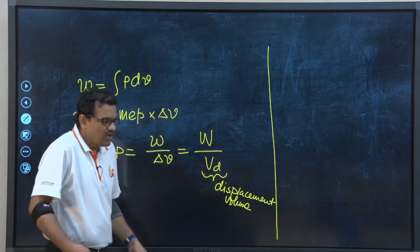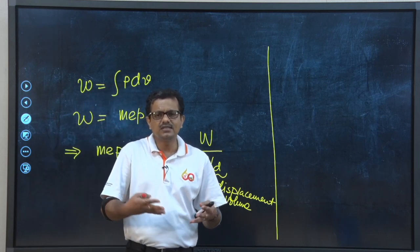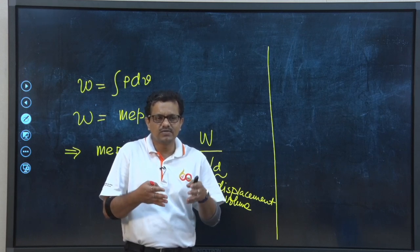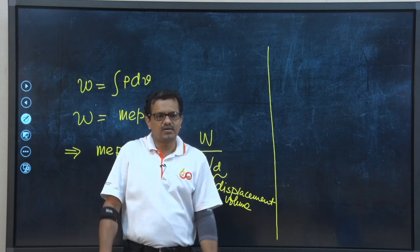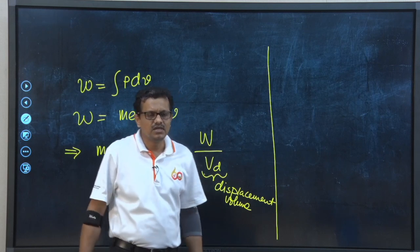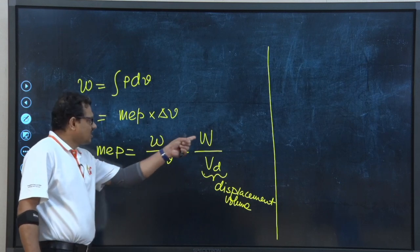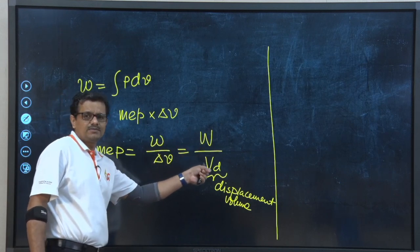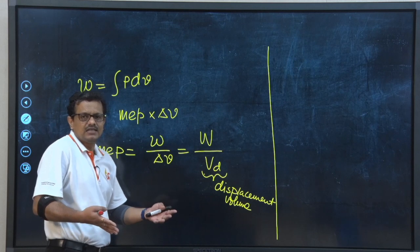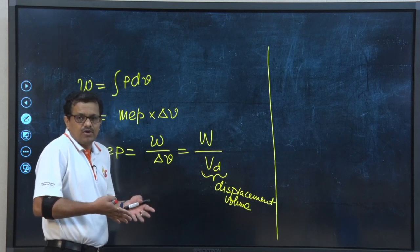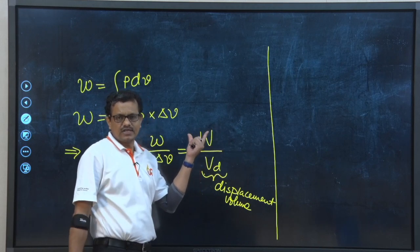Mean effective pressure is very important to quantify the work output from the engine, provided we know the displacement volume. This quantity is always known because the engine designer designs the engine for a certain stroke length. We often discuss x cc, y cc, z cc engines — cc stands for cubic centimeter, which is the stroke volume or displacement volume. Higher displacement volume means higher work output, so the engine will be more powerful.